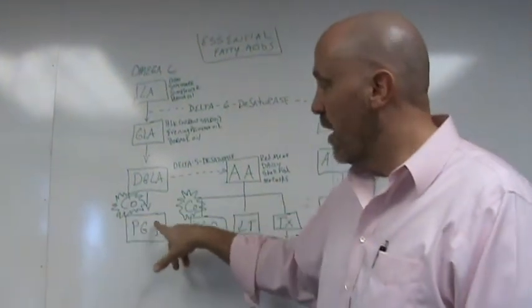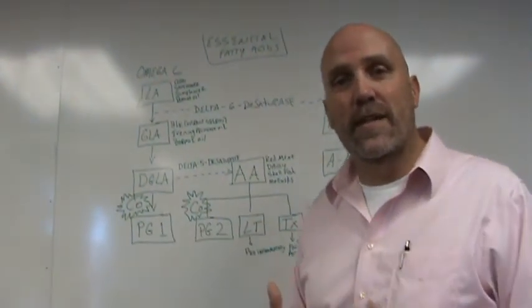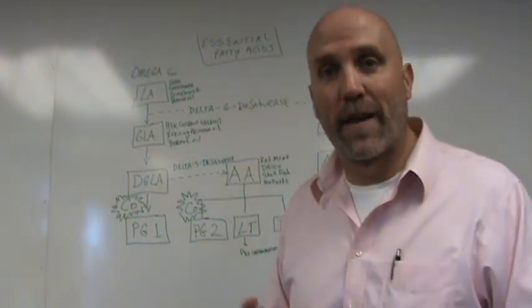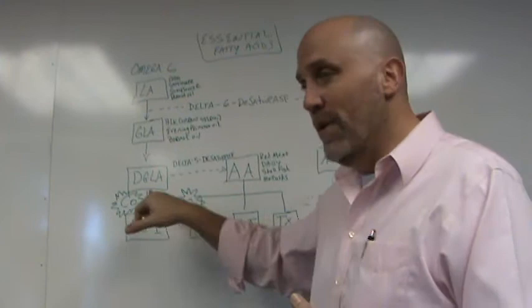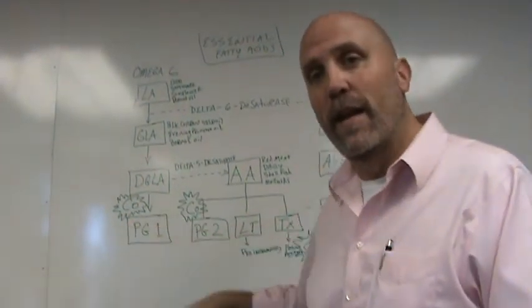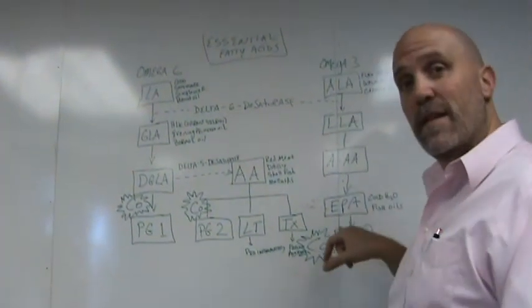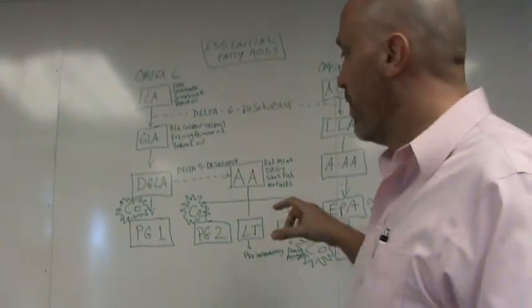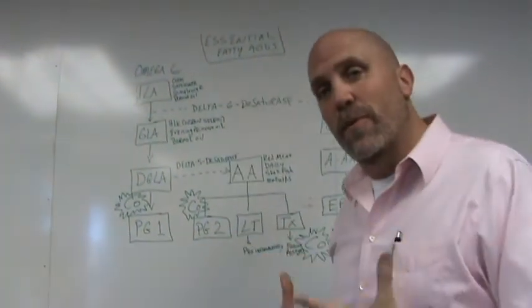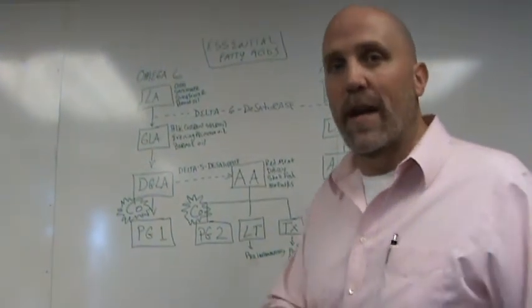It also cuts off this pathway, which is your gastrointestinal lining maintenance track. That's why you start getting those GI bleeds, because it's inhibiting that ability to maintain your intestinal lining. It also cuts off this, which gets you your anti-inflammatory response. So while it gives you temporary relief, it's actually causing all kinds of detriment in the body.